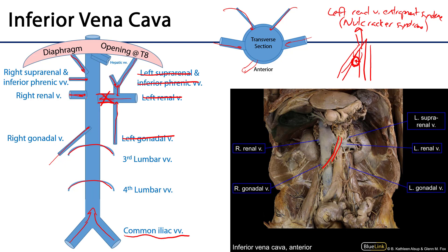In addition to all these branches, there is also a cluster of generally three hepatic veins. These are hard to see because the liver is in the way for many dissections, but these hepatic veins drain blood from the liver into the IVC. Blood gets to the liver through two sources: the right and left branches of the hepatic artery proper, and blood from the hepatic portal system. All of that blood is returned to caval circulation through these hepatic veins.